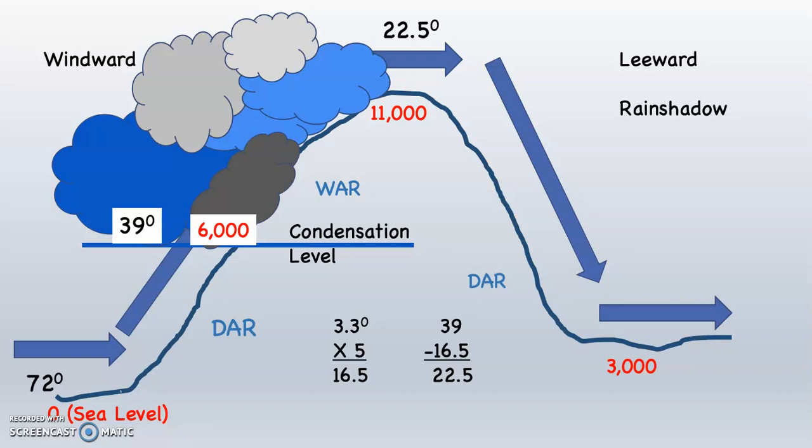If something was coming out of the clouds at 11,000 feet, is that going to be snow or rain? Snow.